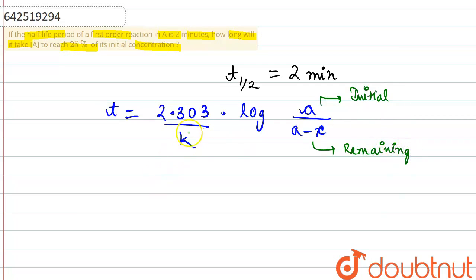Right, and first of all, we will also be requiring the rate constant here. Because half-life is given to us, we can use the expression 0.693 divided by T half. So we can put the value 0.693 divided by 2, which comes out to be equal to 0.346 minutes.